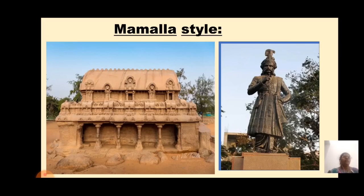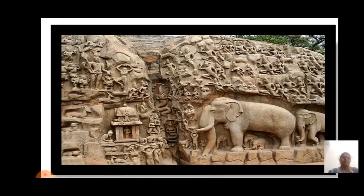The most important feature of the Mamalla style of architecture is the open-air gallery. Several miniature sculptures are present, such as the figure of a lice-picking monkey, elephants of huge size, and the figure of an ascetic cat, sculpted beautifully on the wall of a huge rock. The fall of the river Ganga from the head of Lord Shiva, and Arjuna's Penance, are notable among them. The great Arjuna's Penance panel is considered to be the world's largest open-air bas-relief.